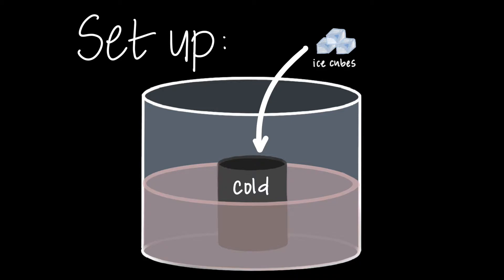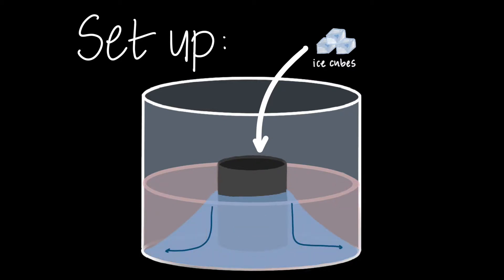By adding ice to the can, we actually cool down the water surrounding the can, causing this water to sink and move out to the edges of the tank. This cold cone-shaped mass is considered a baroclinic condition, or a condition when we have tilted temperature or density surfaces within the tank. These tilted density surfaces actually drive the instability or eddy generation that we'll be seeing in the experiment.